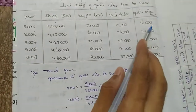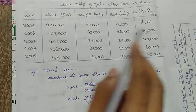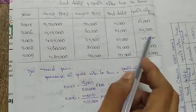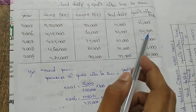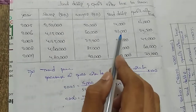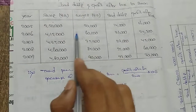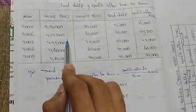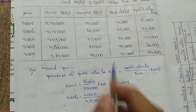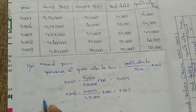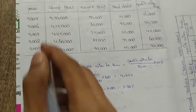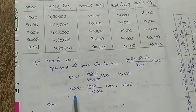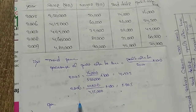The profit after tax to sales percentage is calculated for each year from 2005 through 2009. The difference between profit after tax and sales is noted for years 7, 8, and 9 as well.